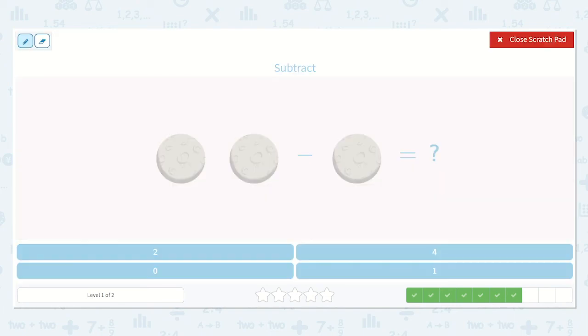Alright. Next, we have 1, 2, minus 1. Let's see what that is equal to. If we have 2, and we take away 1 of them, how many are we left with? Yes, just 1.